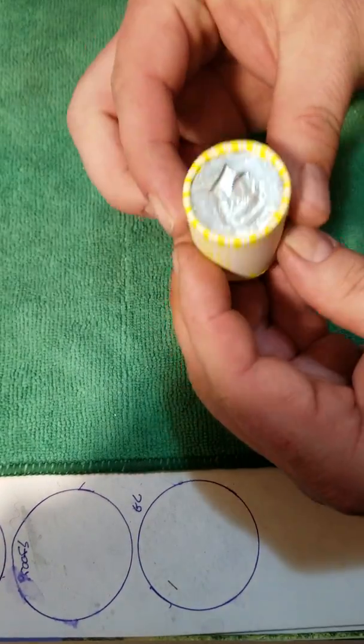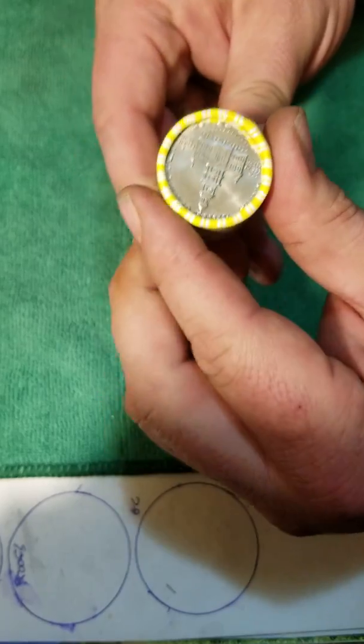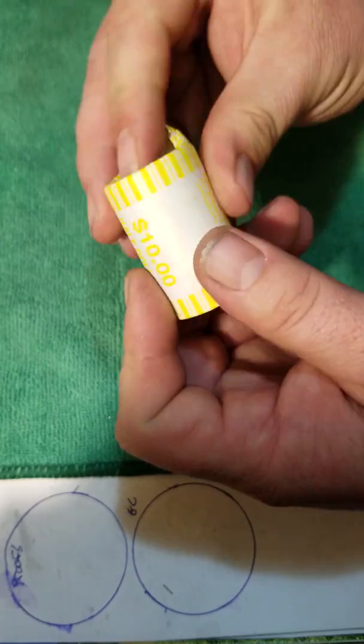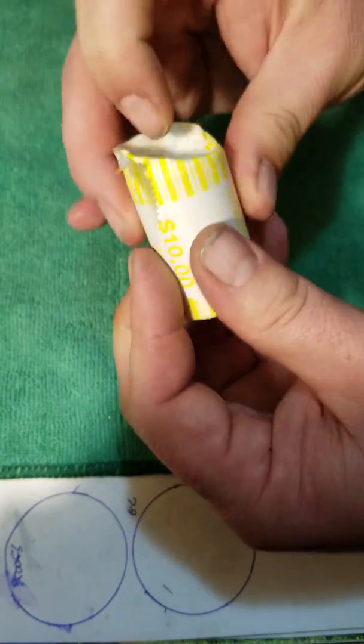All right guys, roll number five. Don't think we got any enders there, although pretty good looking bicentennial. I'd love to get me a silver bicentennial. Don't have any of those yet.